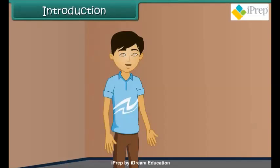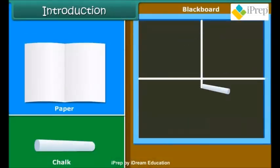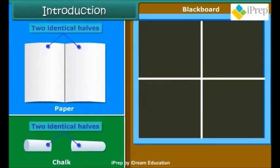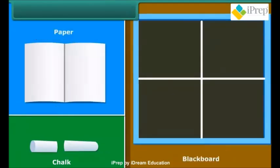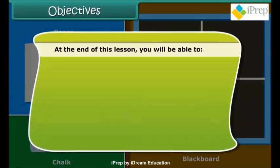Hello children! You may have found that unfolding or cutting some objects — like blackboard chalk or paper — along a particular line gives you two identical halves. These objects are called symmetrical, and the line along which the object is folded is called the line of symmetry. Today, let us learn more about symmetry.